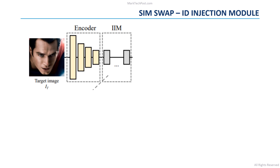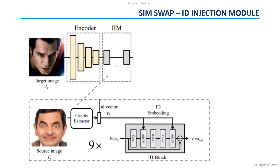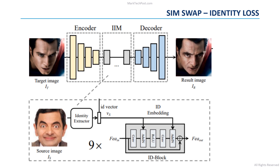The ID injection module is composed of two parts. The first part is the identity extraction: it uses a face recognition solution to extract the identity vector from the source image. The second part is the embedding part, where they use nine ID blocks to inject the identity information of the source image into the features. These ID blocks are a modified version of the residual blocks of the ResNet architecture — the idea being that the input of the block is added to the output of the last layer, creating a skip connection that speeds up training. After injection, the modified features are passed through the decoder to generate the final result image. The decoder focuses only on restoring the image from the features, and the identity modification is handled solely by the ID injection module, so SIMSWAP can be applied to arbitrary identities.